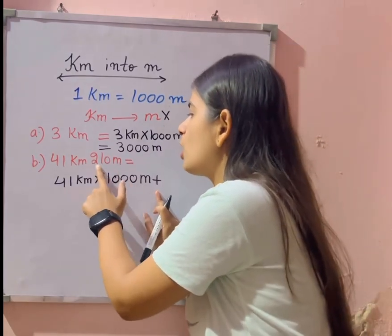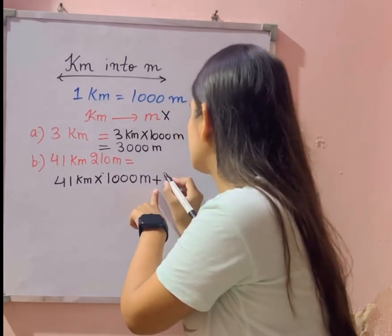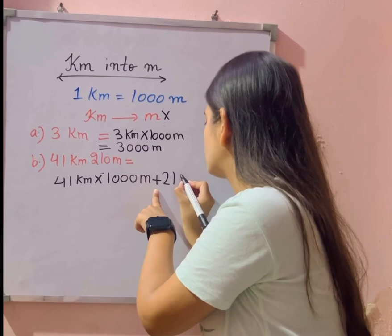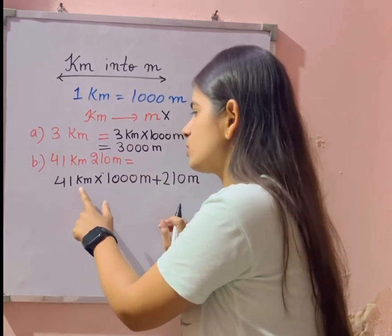Abhi yahan pe kaunsa sign laga doge? Plus ka. Two ten meter yani already meter me hai, isko hame meter me karne ki zarurat nahi hai. To iske liye hum kya karenge? Isko add karenge. Two ten meter ko hame karenge add. So ab is question ko hame